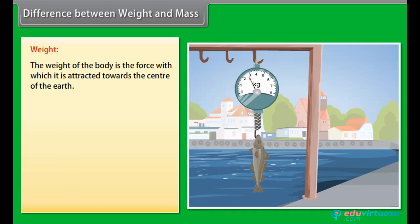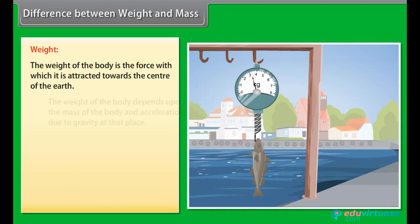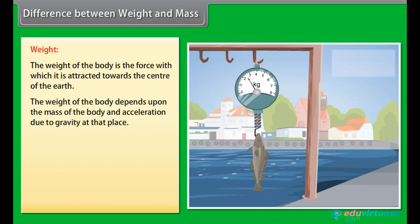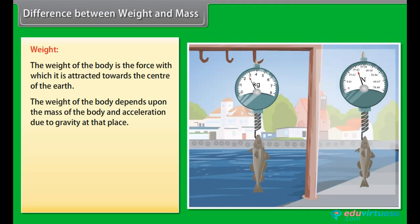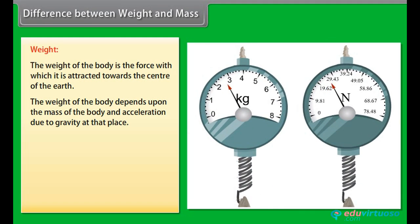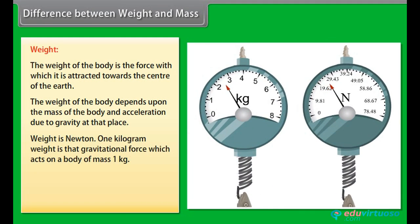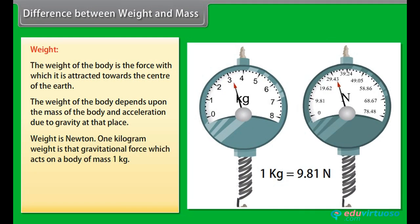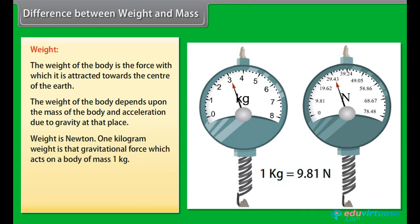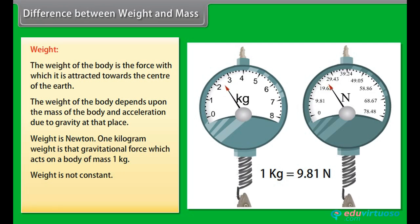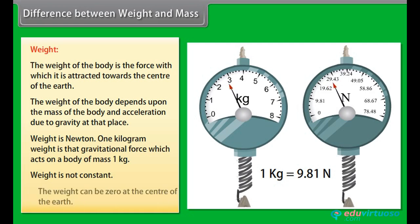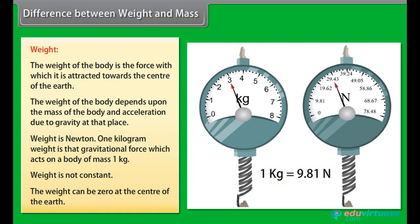Weight: the weight of the body is the force with which it is attracted towards the center of the earth. The weight of the body depends upon the mass of the body and acceleration due to gravity at that place. One kilogram weight is that gravitational force which acts on a body of mass one kilogram. Weight is not constant; the weight can be zero at the center of the earth.